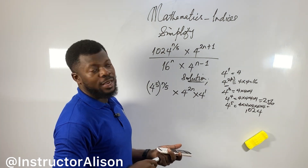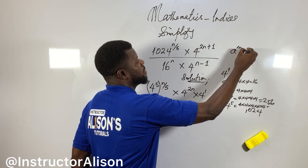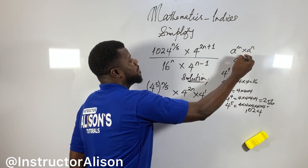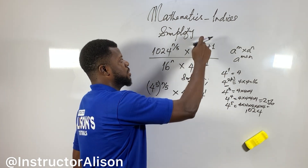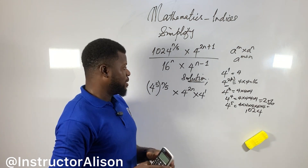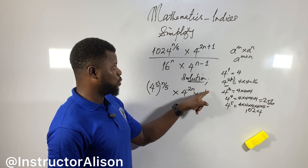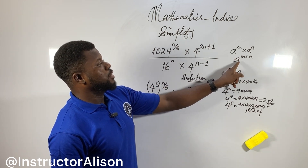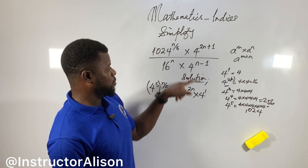Now, the law of indices: if you get a raised to the power of m times a raised to the power of n — the product law — when the base is the same, you take one of the common bases and add the powers: m plus n. So when they multiply and the bases are the same, you add the powers. That means 4^(2n) times 4^1 gives 4^(2n+1). Similarly, a raised to the power of m times a raised to the power of n gives a raised to the power of m plus n.